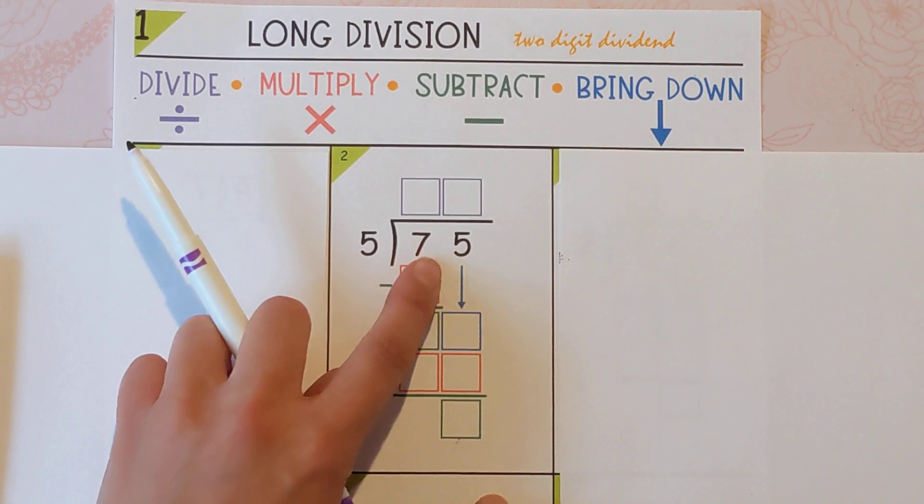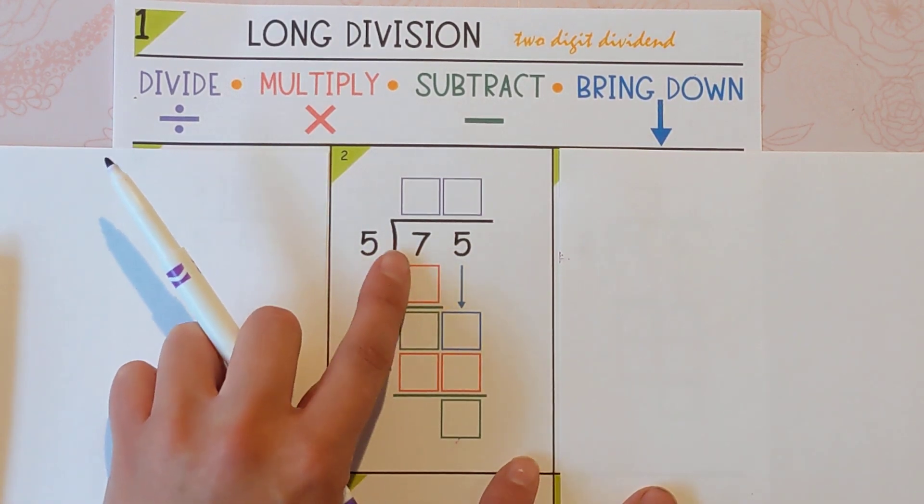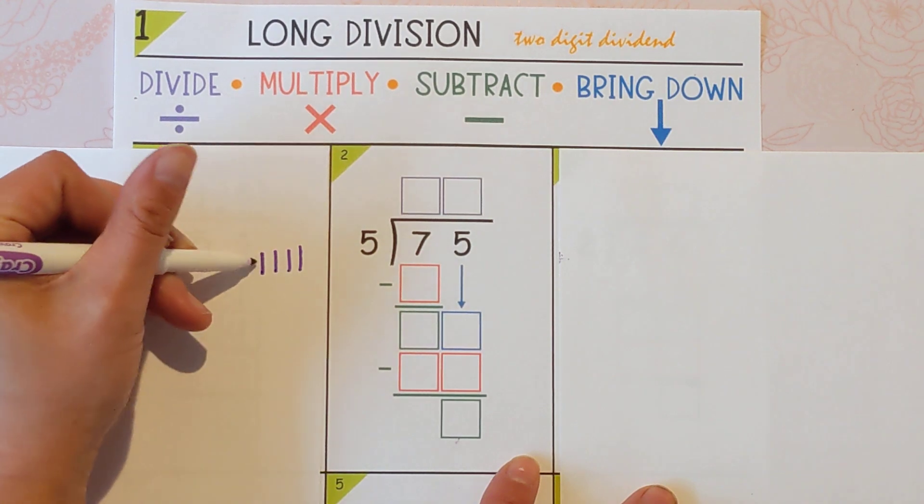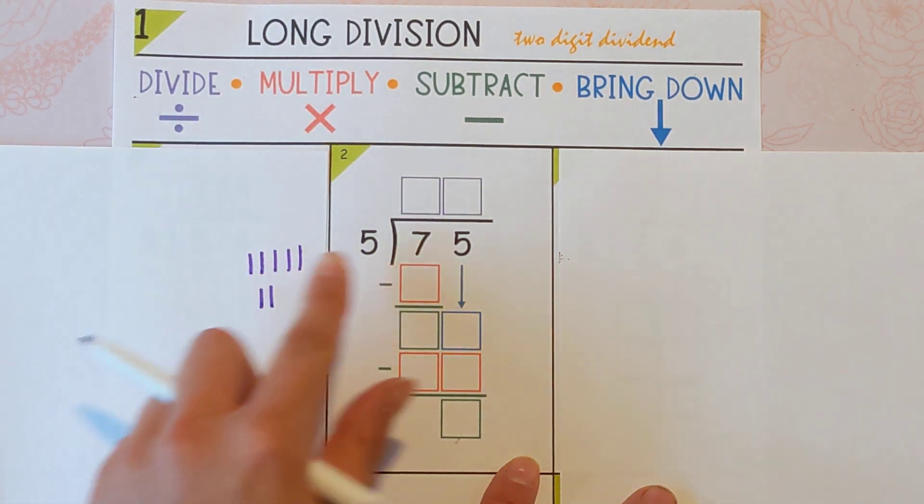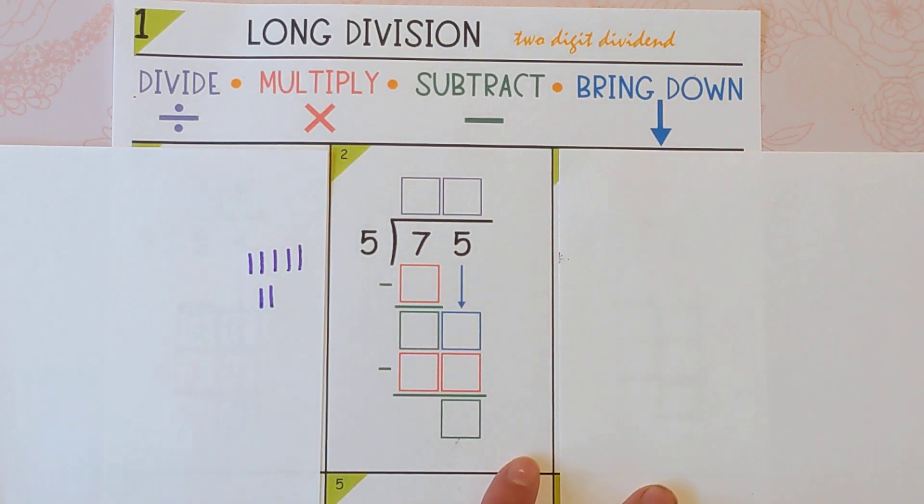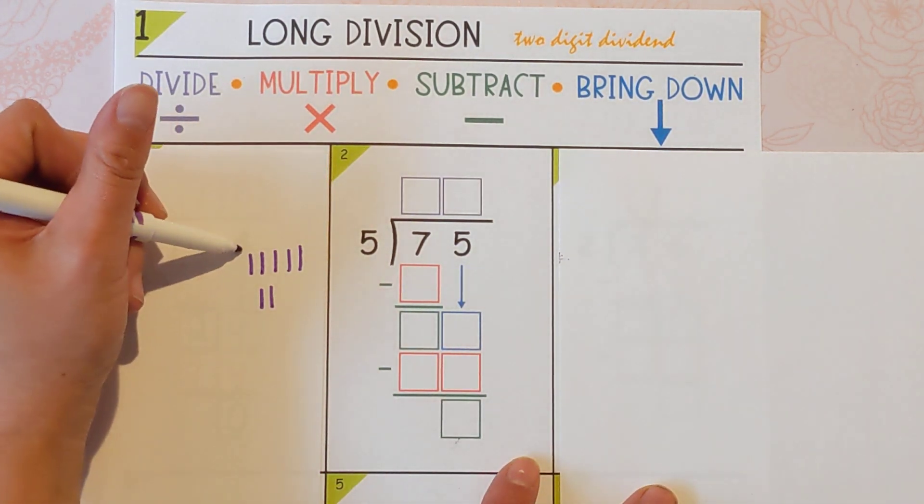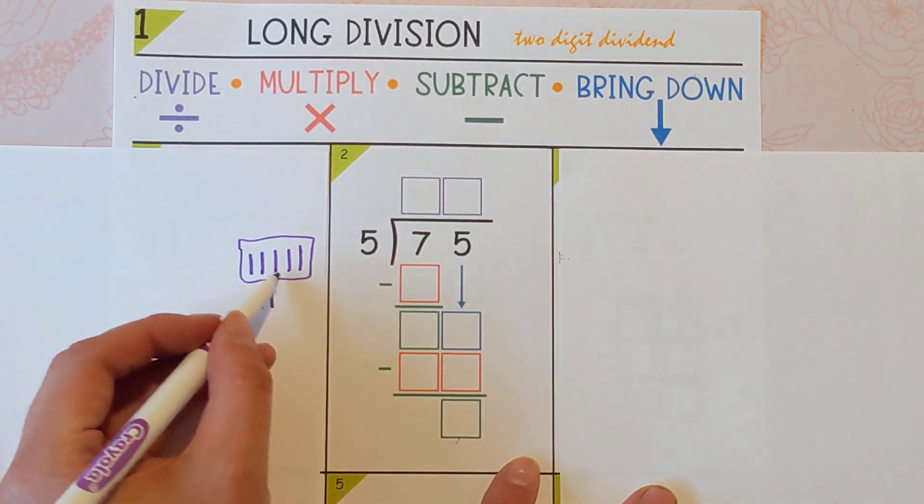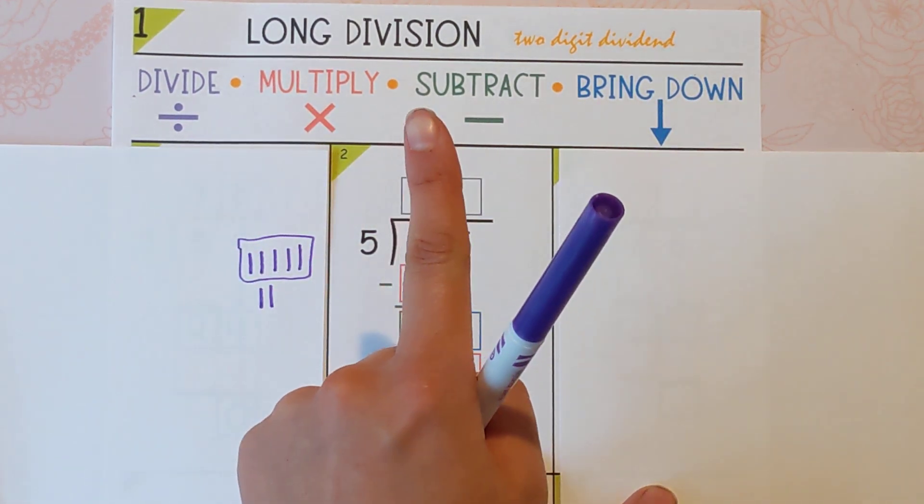But when we say 7 divided by 5, we know it might not fit in perfectly, but we're just saying how many groups of 5 could you make if you had 7 of something? And I could make one group of 5 and there would be some left over.